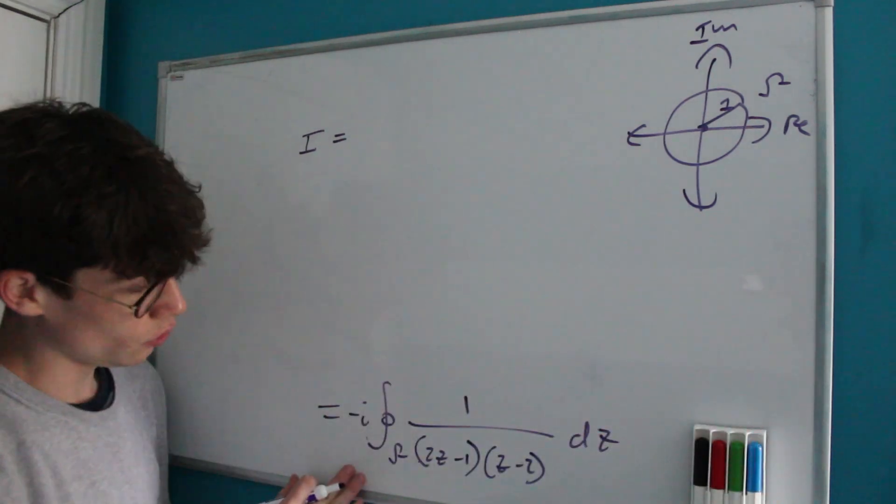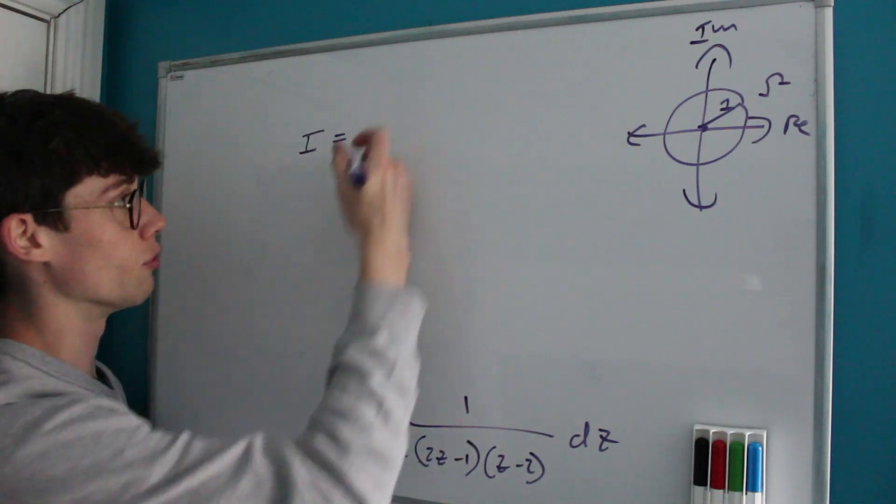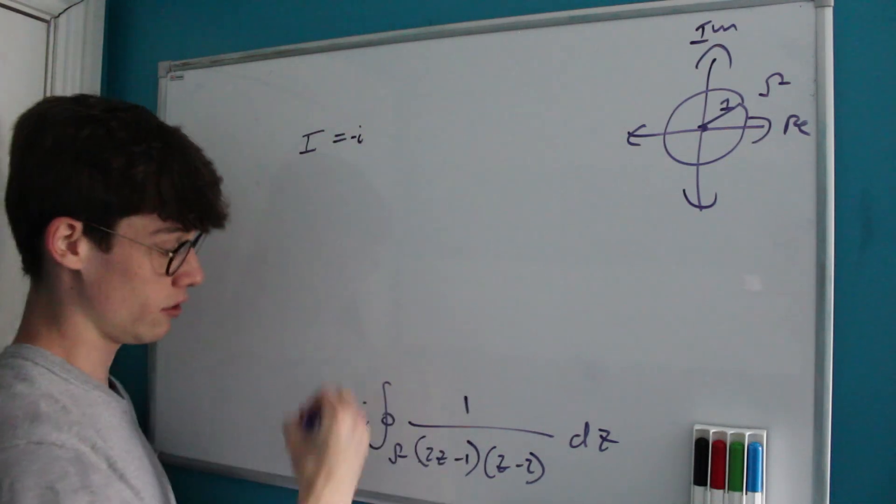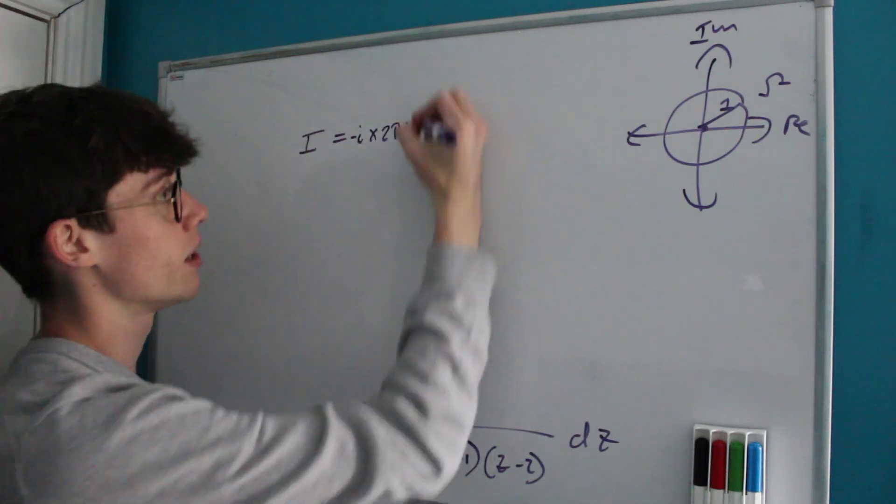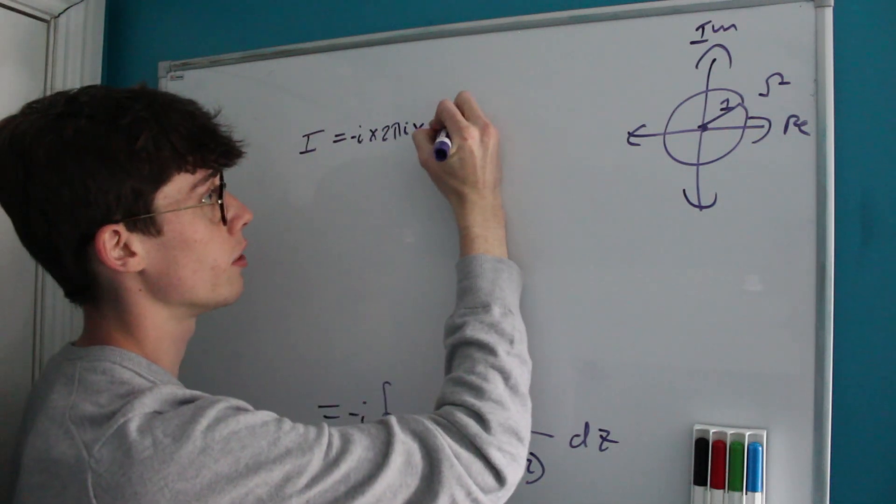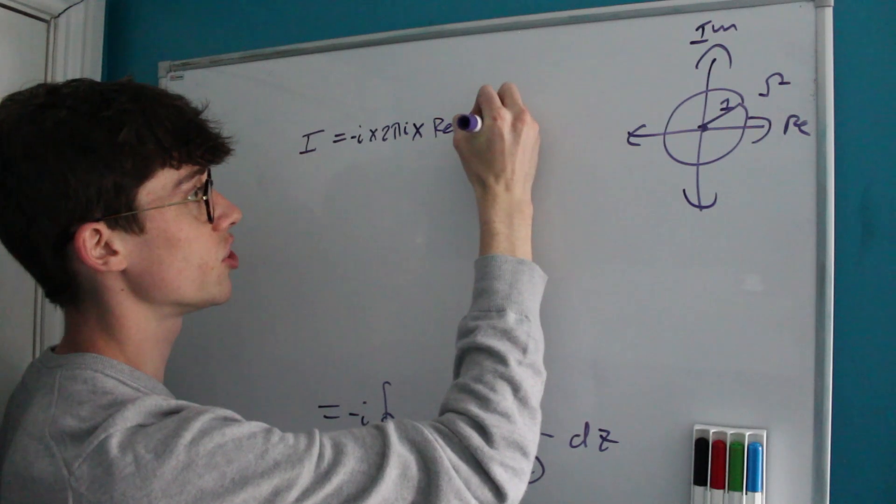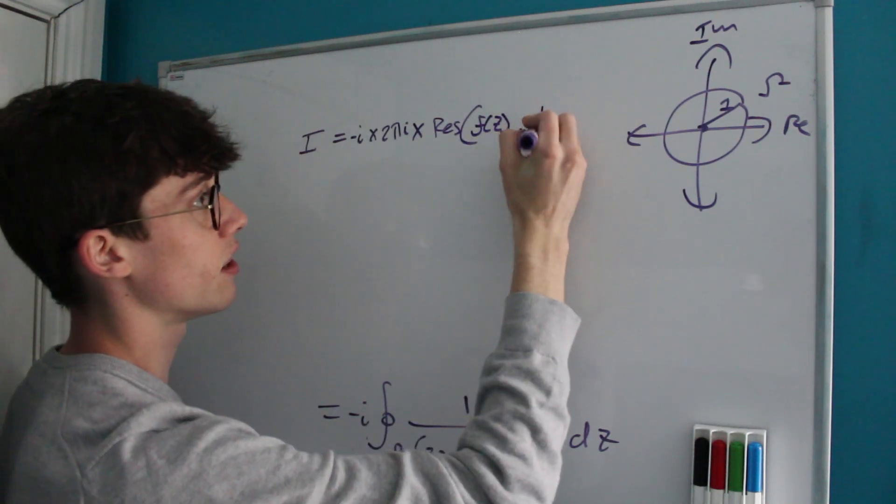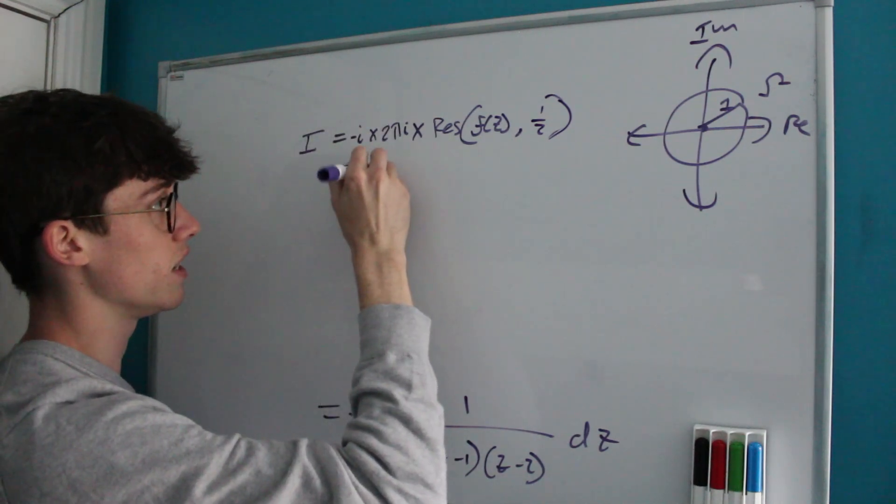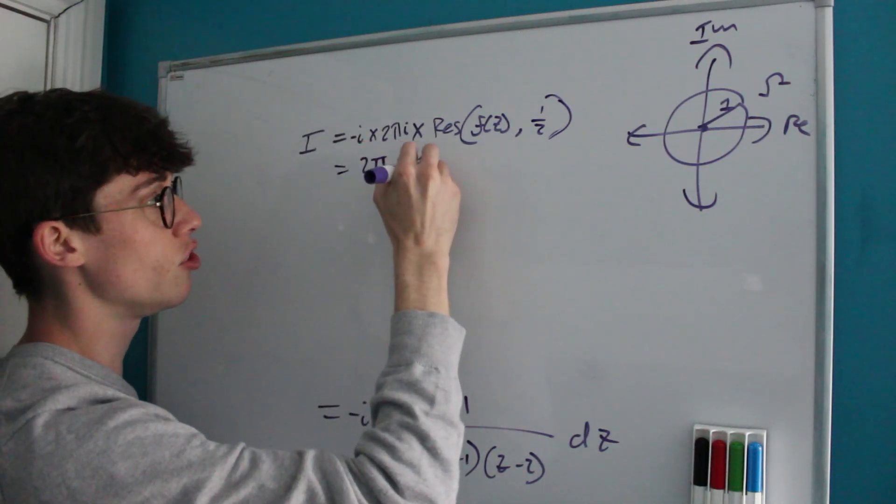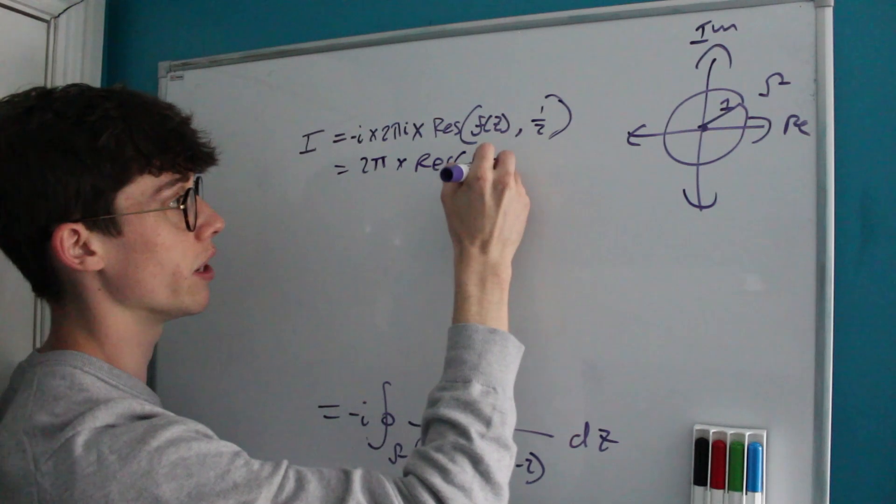So all that we have to do is say that this integral is equal to negative i, because of course we've got our coefficient, times 2πi times the sum of the residues of our function at a half. And of course negative i times i is just one. So really this is just 2π multiplied by our residues.